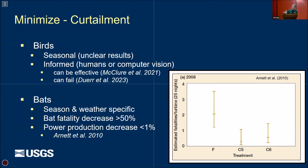With bats, there are season and weather-specific curtailment strategies that are really effective. We also talked about cut-in speeds — the speeds at which the blades start spinning. The higher those are, the less risk there is to bats. Those are things we can change, sometimes with very small changes to power production, and the newer turbines may offer exciting opportunities there.